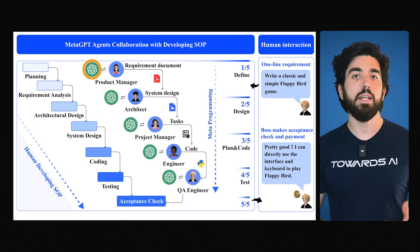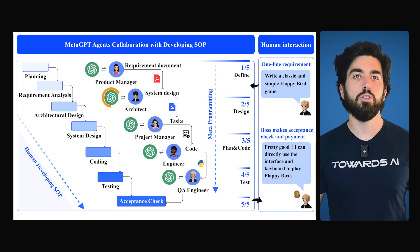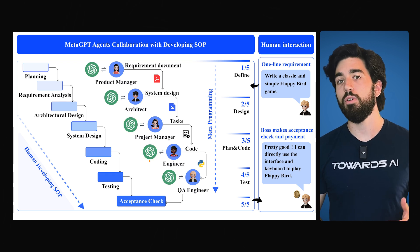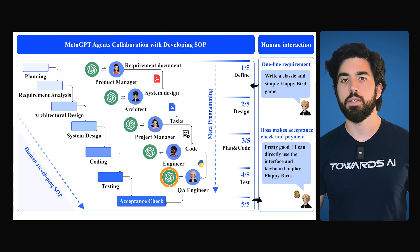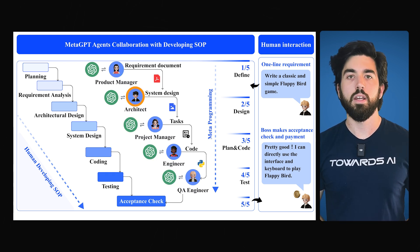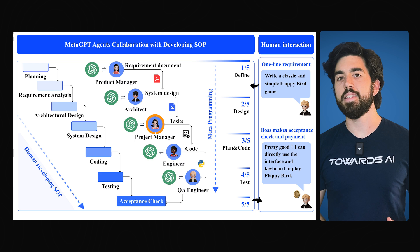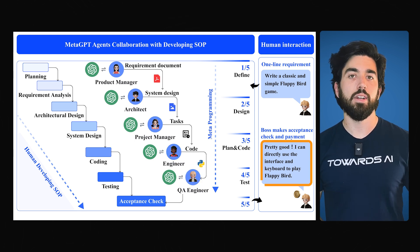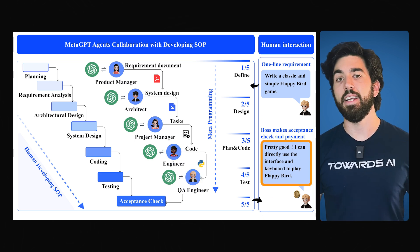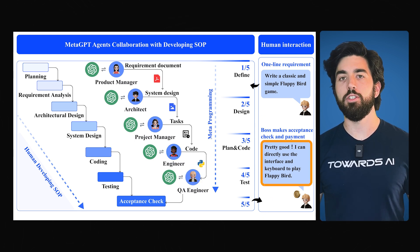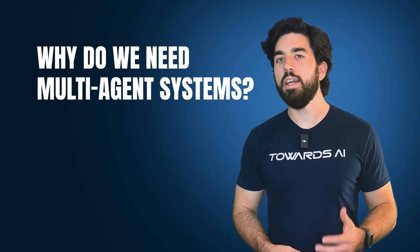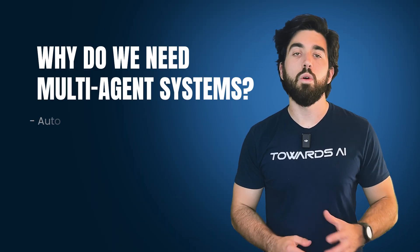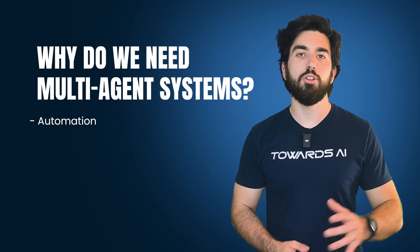It's simply about having multiple agents, each with their own specialty, collaborating to solve complex problems. Think of it like a group of experts. Each one excels at a specific part of a project and together, they are able to achieve much more than any one individual could. But why do we need multi-agent systems at all? One word: automation.